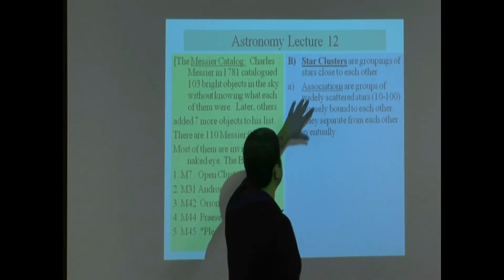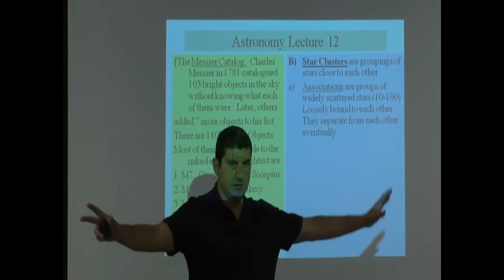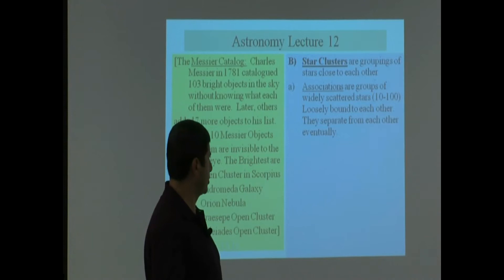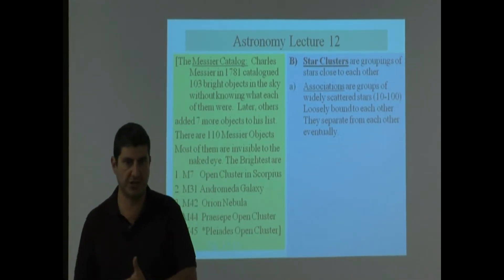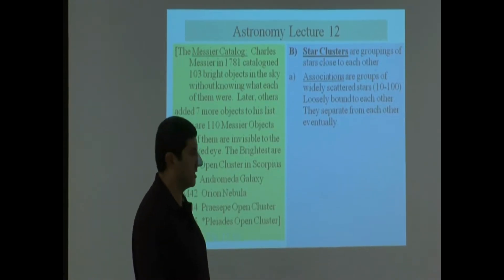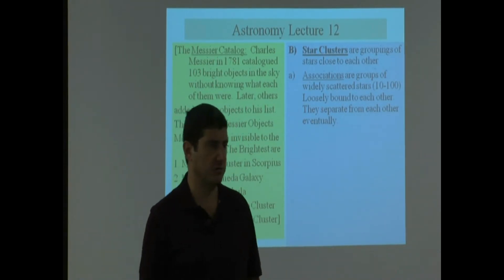They are gravitationally bound to each other and they pretty much stay together for most of their lives. Association is one kind of star cluster. They are a group of widely scattered stars, ten to a hundred, loosely bound to each other. Loosely bound means they don't necessarily have to stay together the rest of their lives. They separate from each other eventually.